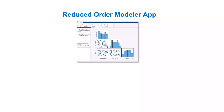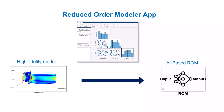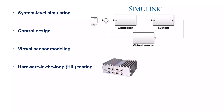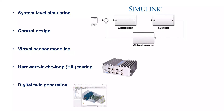The Reduced Order Modeler app lets you interactively create AI-based reduced order models, or ROMs, of subsystems modeled in Simulink, including full-order high-fidelity third-party simulation models brought into Simulink as functional mock-up units. You can use ROMs for system-level desktop simulation, control design, virtual sensor modeling, hardware-in-the-loop testing, and digital twin generation.